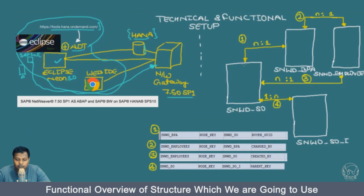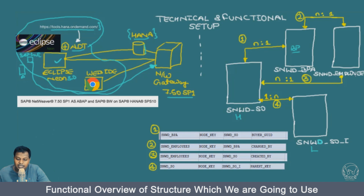Now let's move on to the functional scenario. We have SNWD underscore SO, which is the sales order header table. We also have SNWD underscore SOI, which is the line item for sales order. Then we have SNWD underscore BPA, which is the business partner data. And we have SNWD underscore employees, which contains all the employees data.